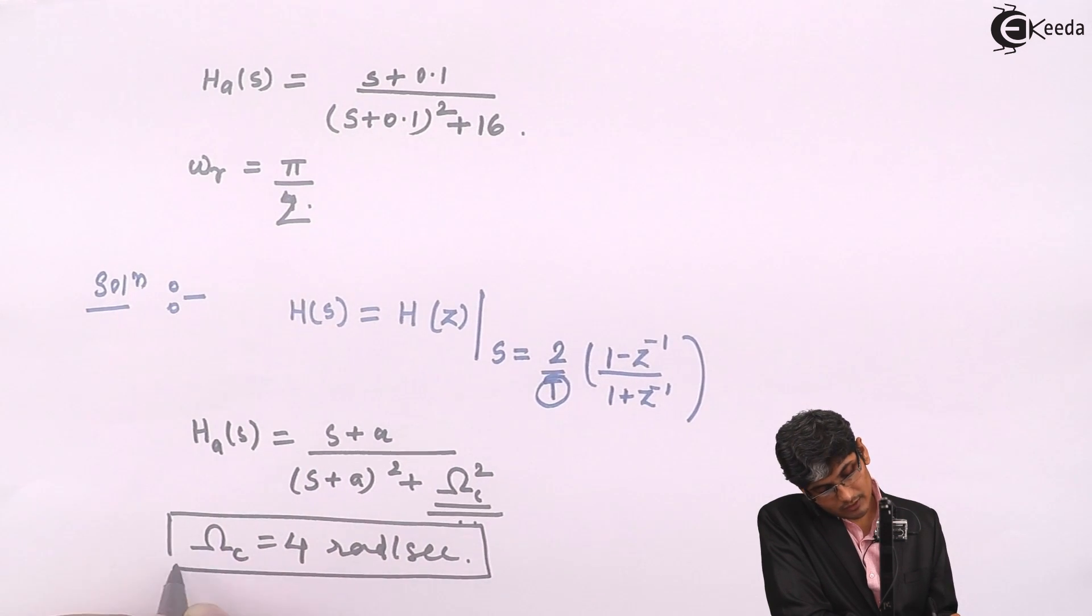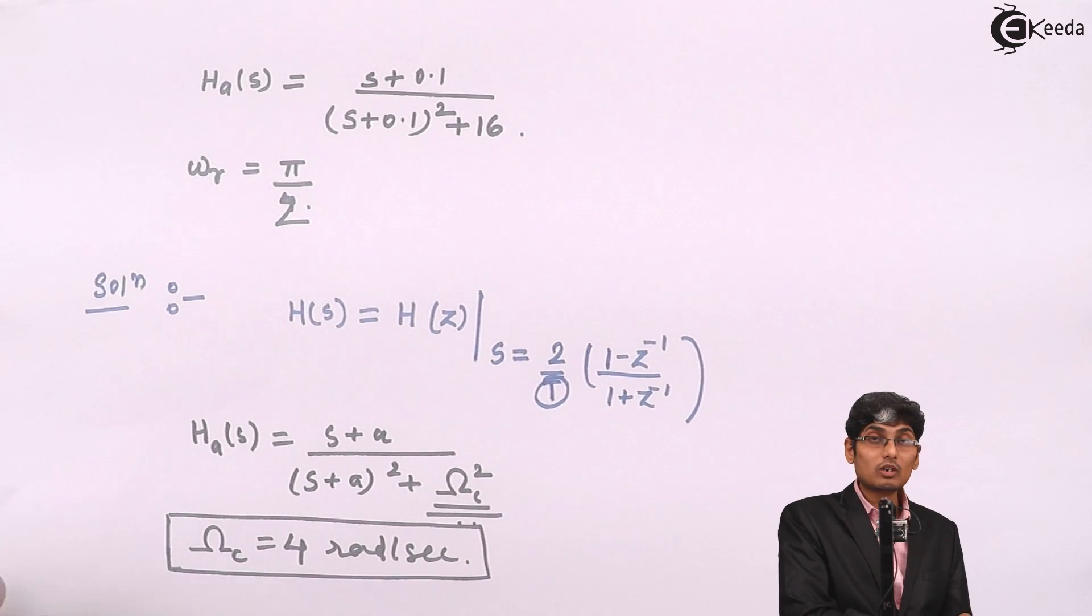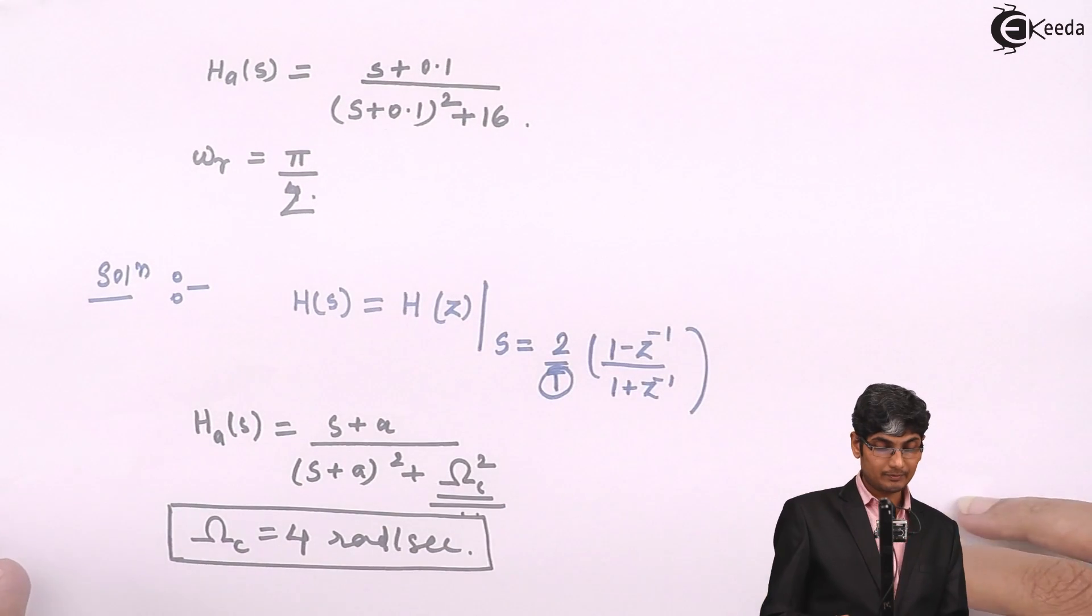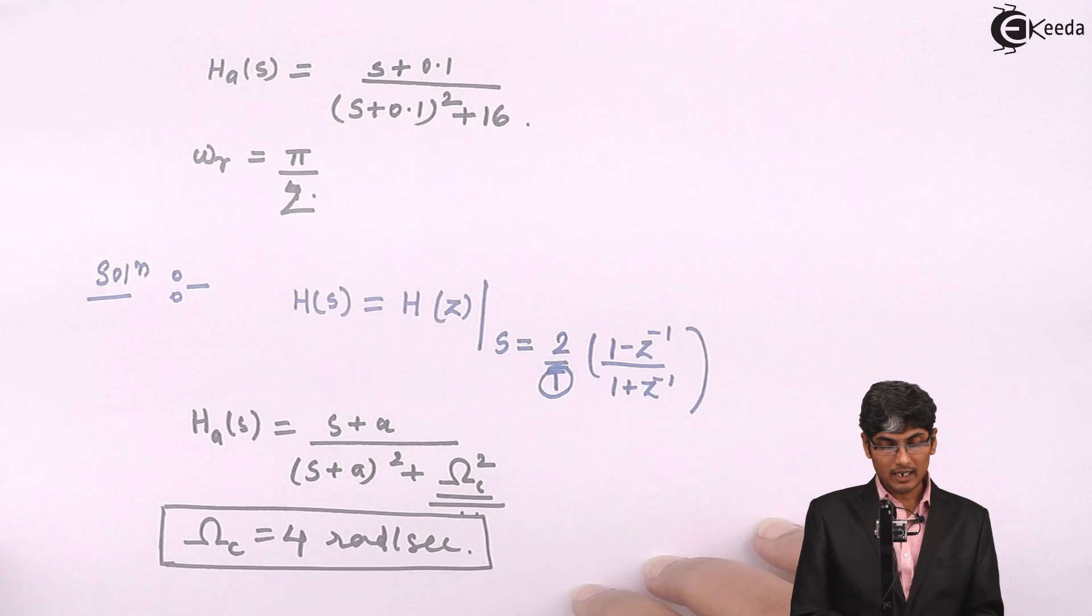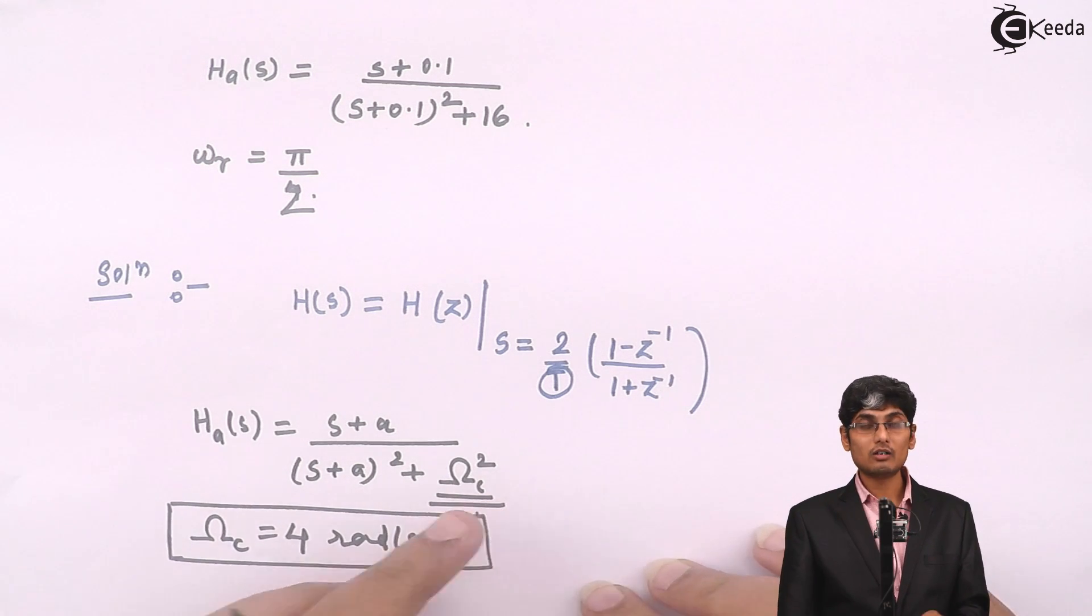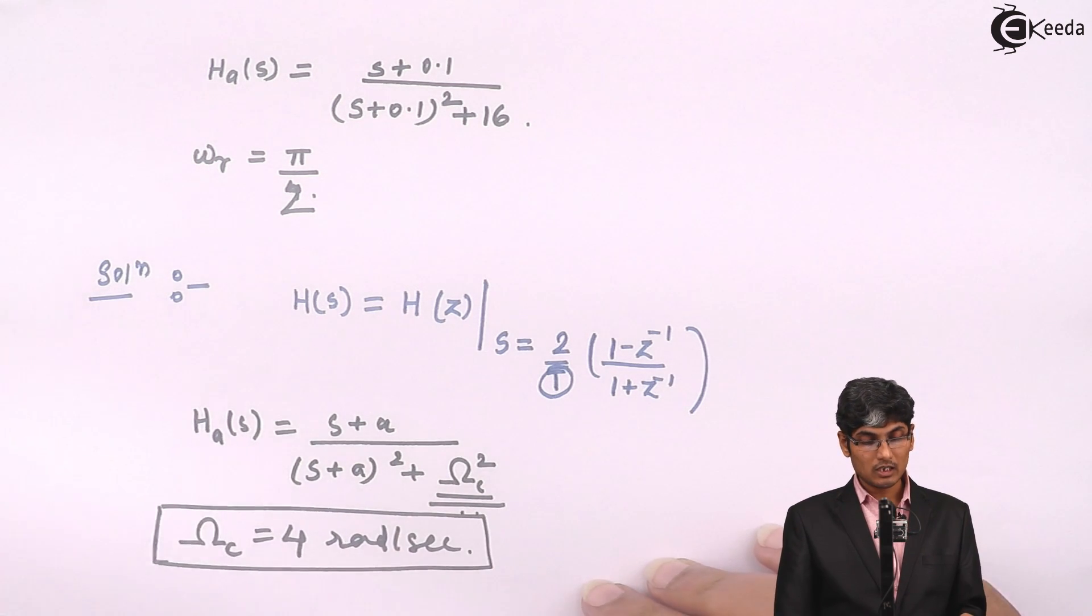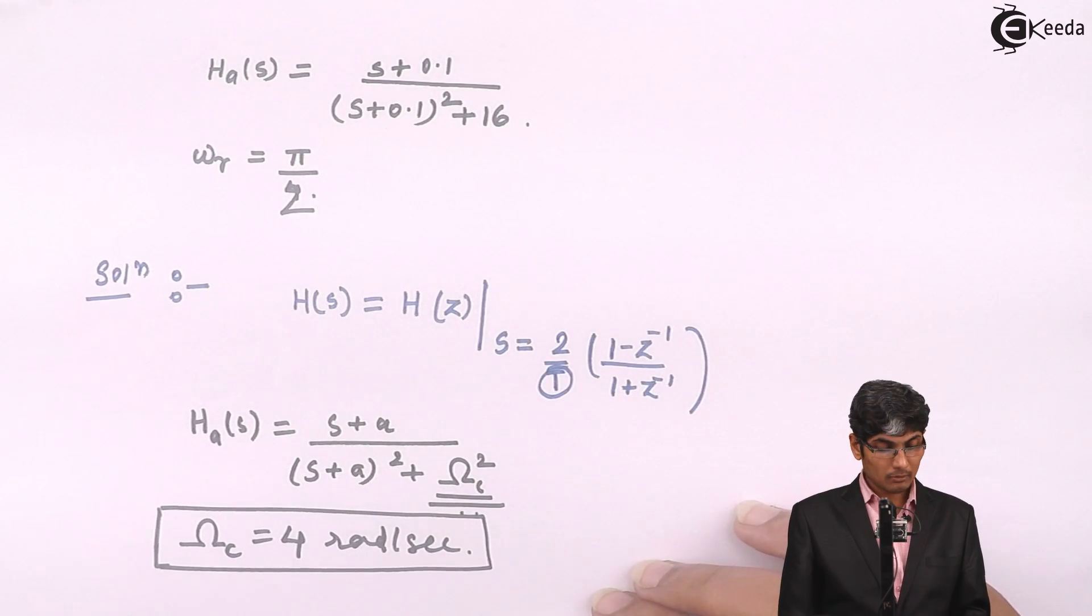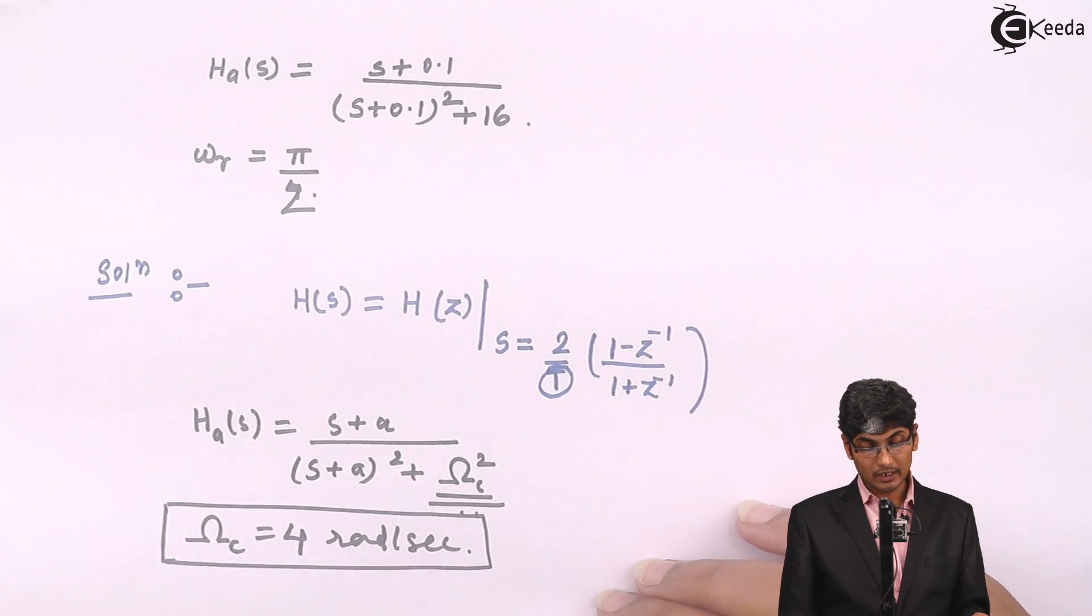So the cutoff frequency in this case is 4 radians per second. So I have received the cutoff frequency as 4 radians per second from the given data. Now, we have the cutoff frequency as 4 radians per second. We know what cutoff frequency the digital filter demands. From there, I can easily calculate my T.